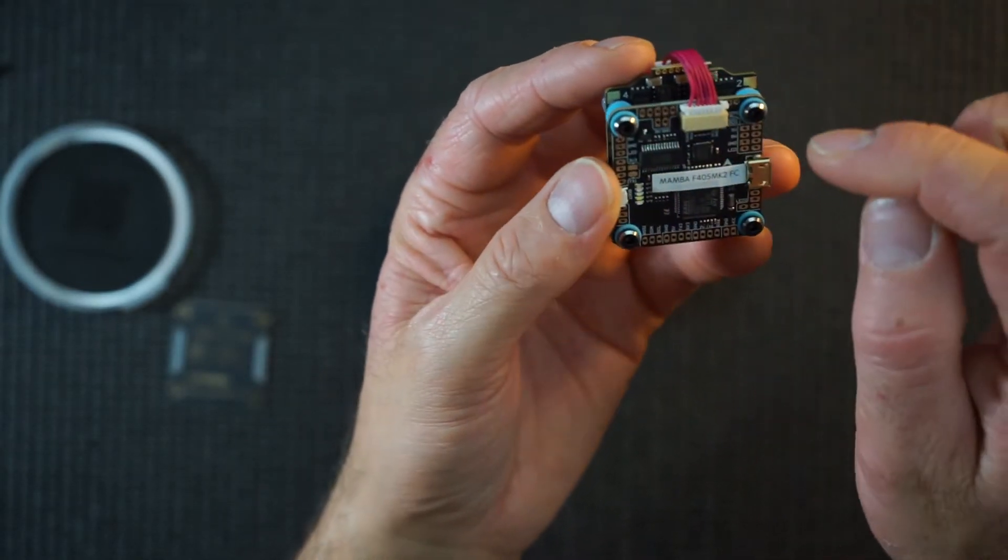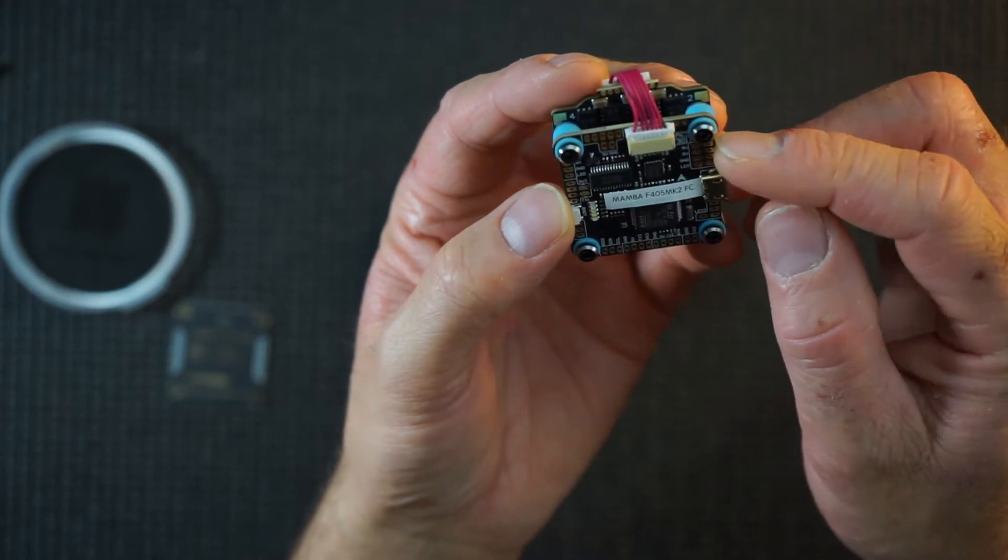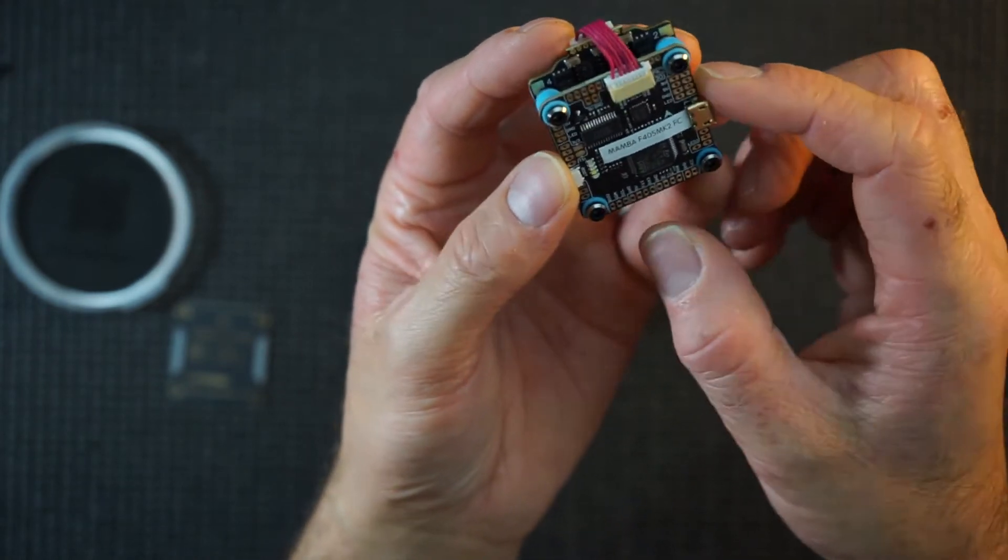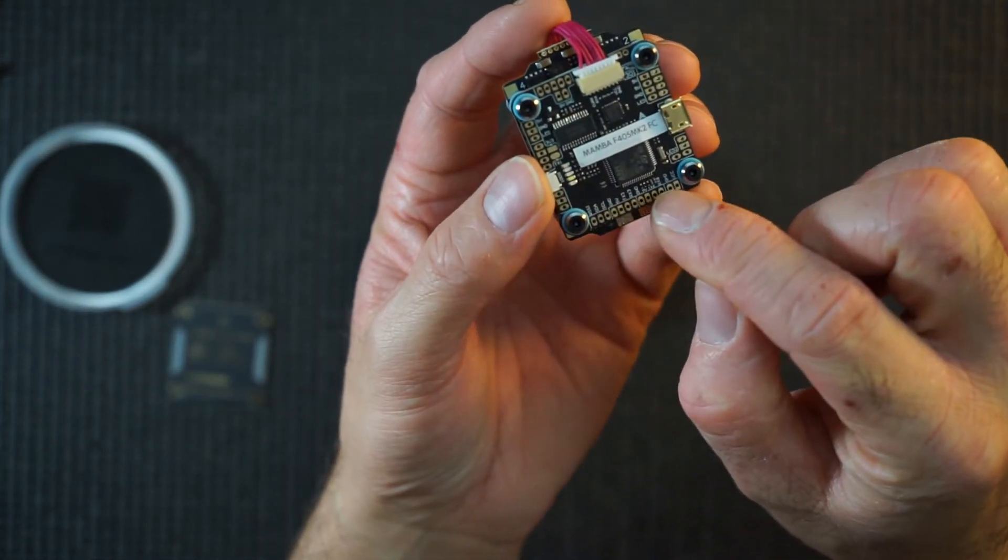Camera goes here. You've got all your pads here. I'm not actually sure what goes there. Your VTX goes on that side, yeah. VTX goes on that side, camera here.